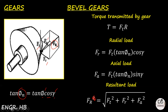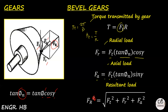For the loads: the tangential force Ft = T/R (same concept as 2T/D, just expressed in terms of radius). The radial load Fr = Ft × tan(normal pressure angle) × cos(cone angle). The axial load Fa = Ft × tan(normal pressure angle) × sin(cone angle). This also means Fa = Fr × tan(cone angle). And of course, the resultant load follows from these three.